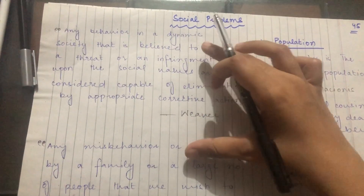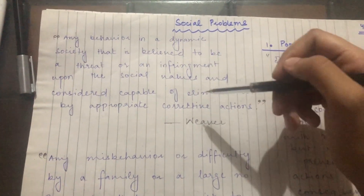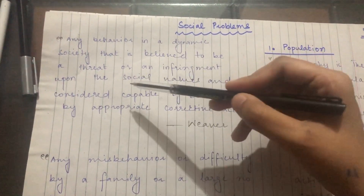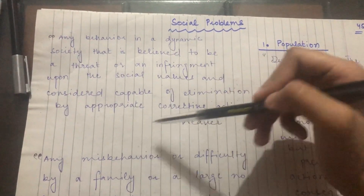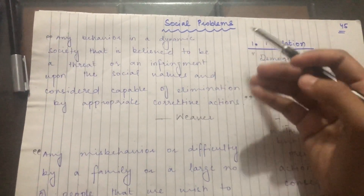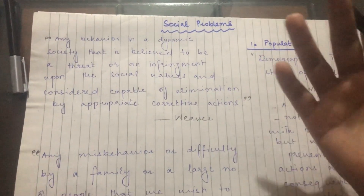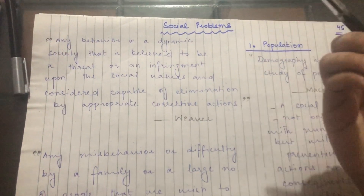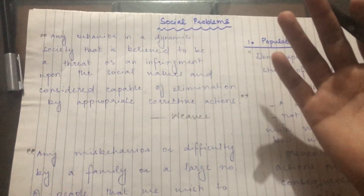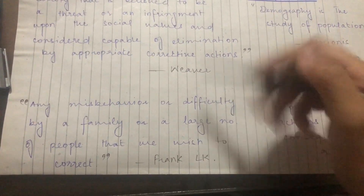First, let's start with Weaver. Weaver says any behavior in a dynamic society that is believed to be a threat or an infringement upon the social values, and considered capable of elimination by appropriate corrective actions, is a social problem. So any behavior in a dynamic society that is a threat or infringement upon social values and can be eliminated — we consider it a social problem.